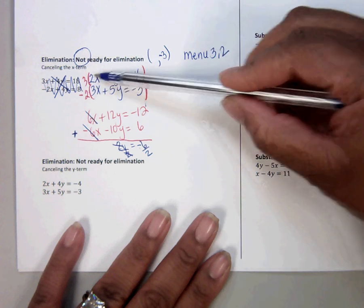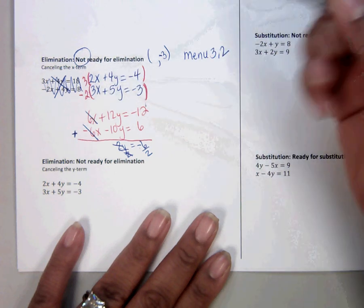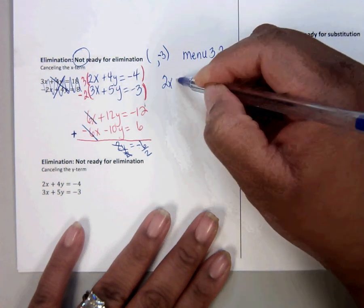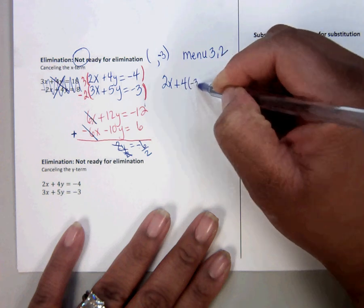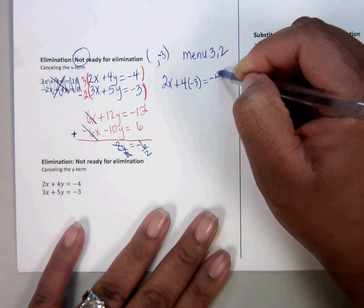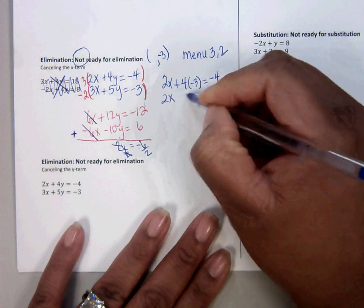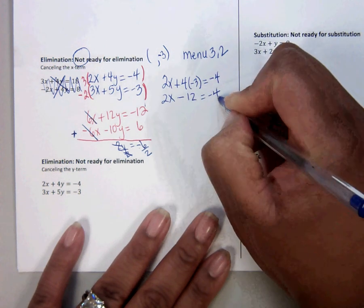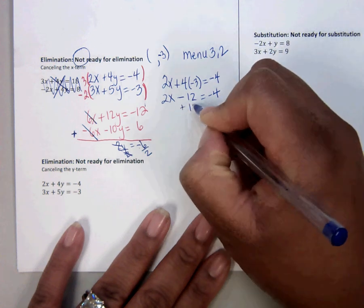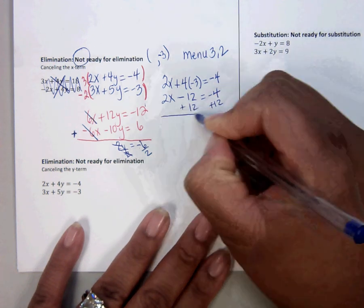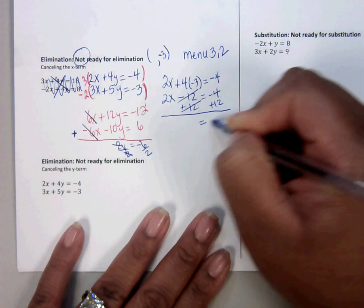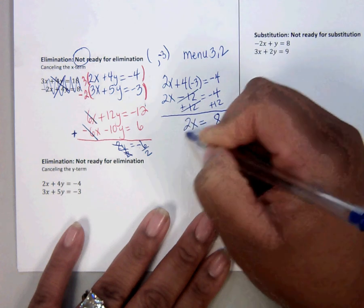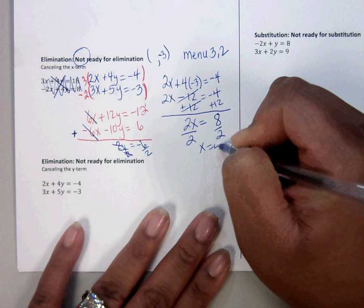Plug that into the original spot for y. So, I'm going to choose the top equation. 2x. That becomes minus 12. So, now we add 12 to both sides. That gives us 8. Divide by 2 and we get 4.